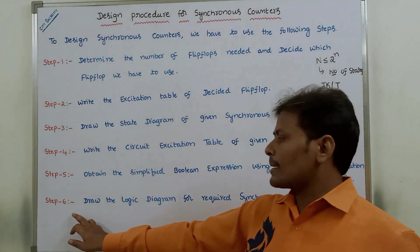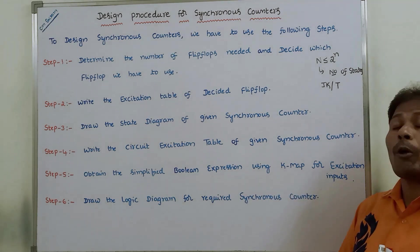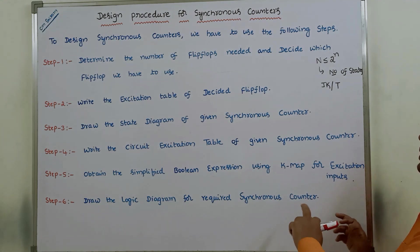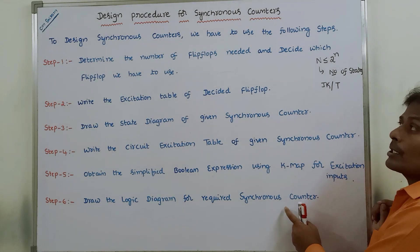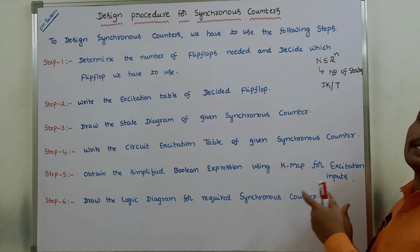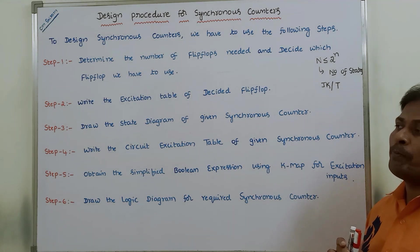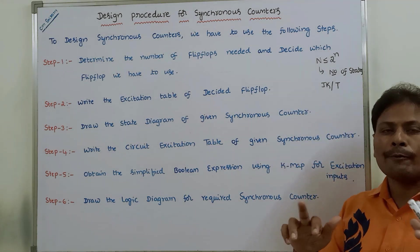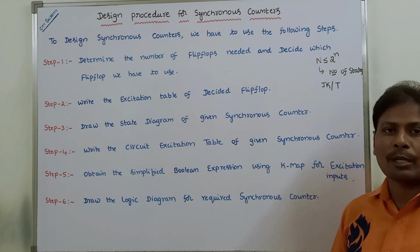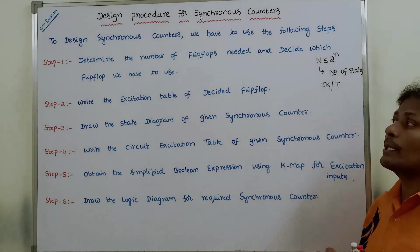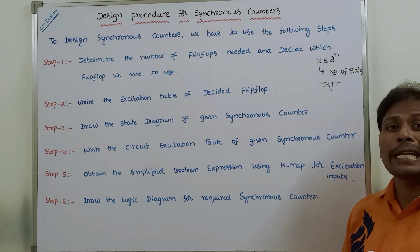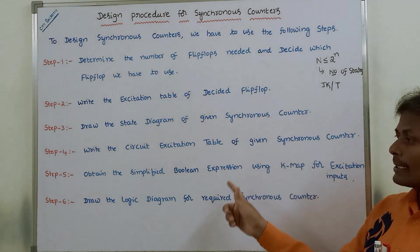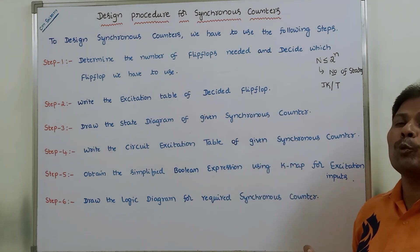Finally, step 6: draw the logic diagram for the required synchronous counter. This is the last step — we design the given synchronous counter. So these are the 6 steps we have to follow to design any synchronous counter. In the next video, based on these 6 steps, we will work through one example.